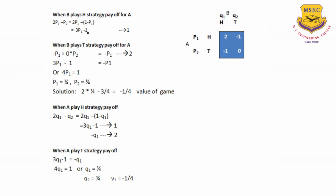Similarly, when B plays the tail strategy, the payoff is minus 1 into P1 plus 0 into P2, which is nothing but minus P1. Now if you look at these two equations, 1 and 2, they are equal. So 3P1 minus 1 equals minus P1, or 4P1 equals 1, giving P1 equals 1/4 and P2 equals 3/4. The value of the game: if you substitute in any one of the equations — let's say 2P1 minus P2 — you will get minus 1/4 as the value of the game.